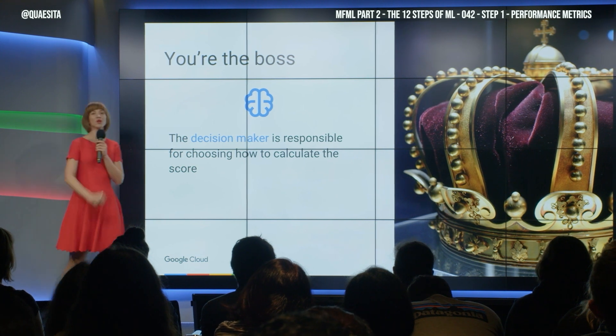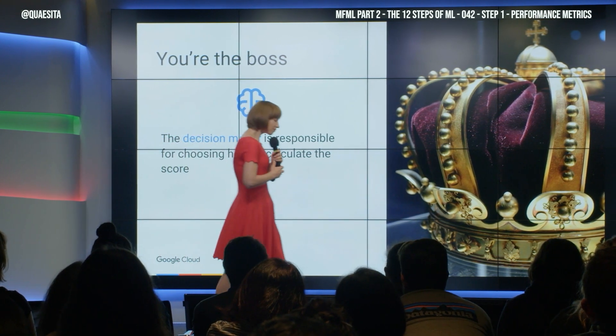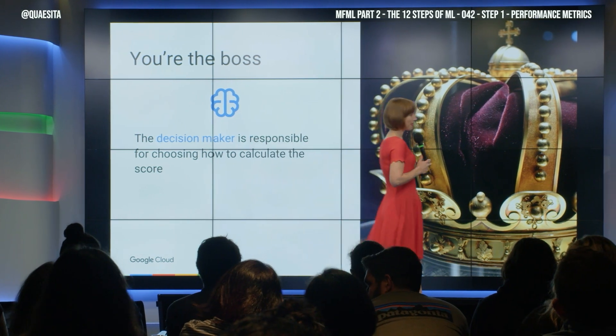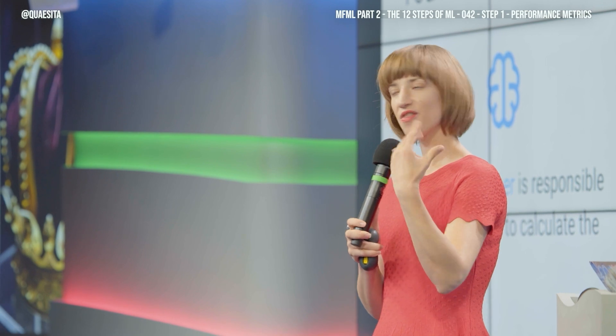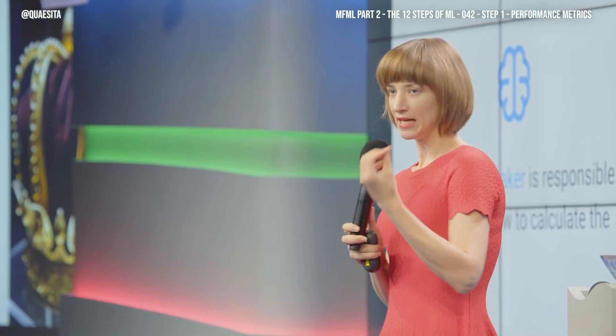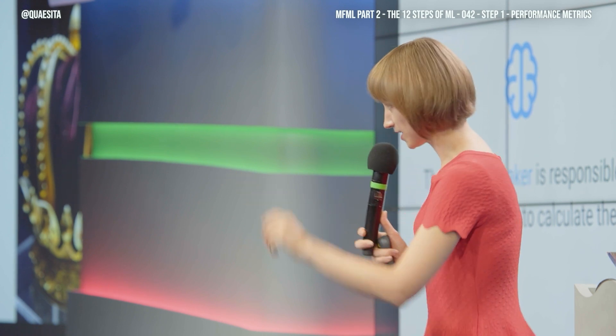And let no nerd ever bully you on this. The machine learning research folk work on building the algorithms, and there are certain things to do with algorithms that make them prefer various scoring functions — we'll talk about that shortly. But it doesn't matter what scoring functions they like. What matters is what is important to your business, and that is how you should evaluate the performance of your system.